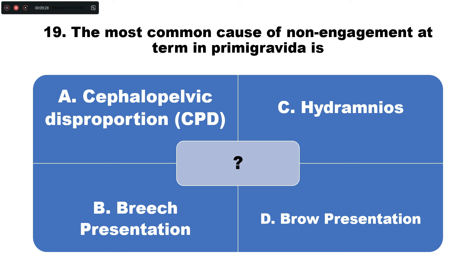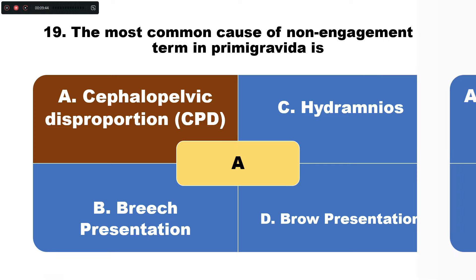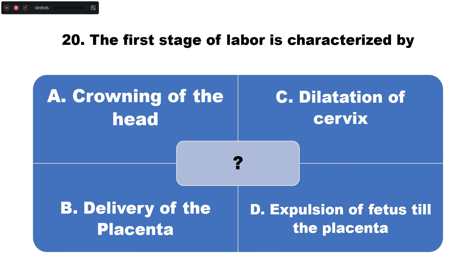Question number nineteen: The most common cause of non-engagement at term in a primigravida is — option A: cephalopelvic disproportion (CPD), B: breech presentation, C: hydramnios, D: brow presentation. The correct answer is option A — cephalopelvic disproportion is the most common cause.